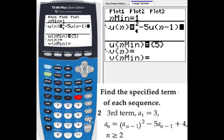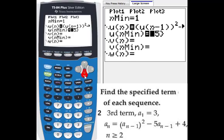Then plus 4. u sub n when n equals 1 is 3.